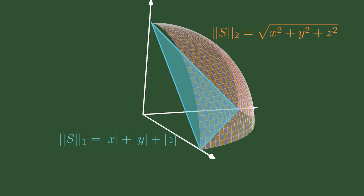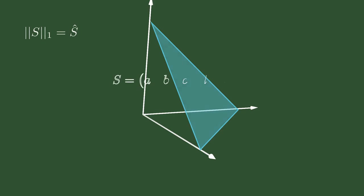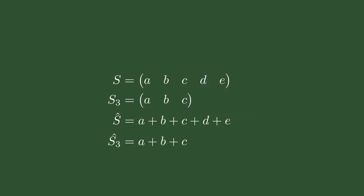To reduce clutter in equations later on, there will be a little bit of shorthand notation. The vector in use will always be a capital S. I will be using the hat symbol to indicate the rectilinear distance. In addition, all subvectors will always start at the first element, so there's only a need to indicate the final element.